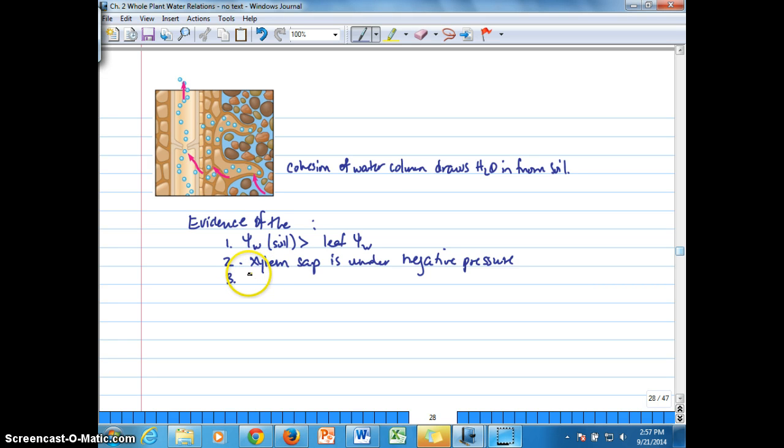And then the third form of evidence is that during the day, during midday or during mid-morning, where transpiration rates might be highest, the stem diameter of perennials is slightly less in the daytime than at night.